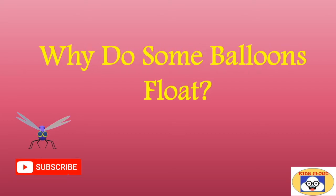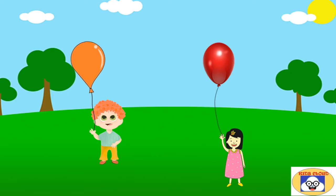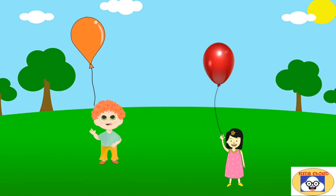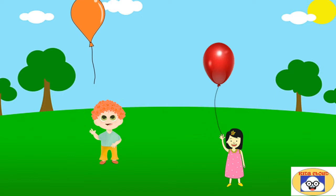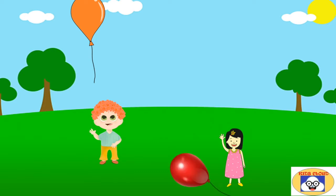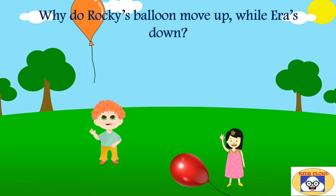Why do some balloons float? Rocky and Ira were playing in the park with balloons. While playing, Rocky released the string. To his surprise, the balloon started moving up. Ira also did the same, but unlike Rocky, her balloon falls on the ground. Both balloons look almost identical except in color. Then the question arises: why does Rocky's balloon move up while Ira's moves down?